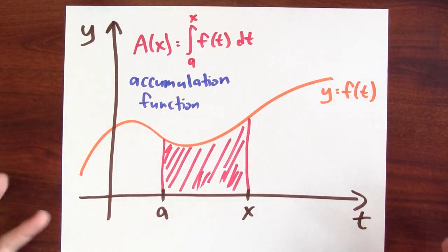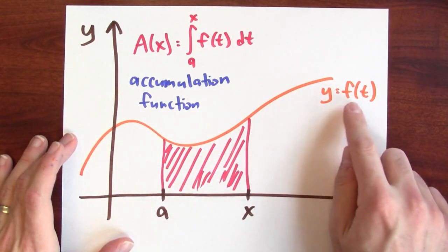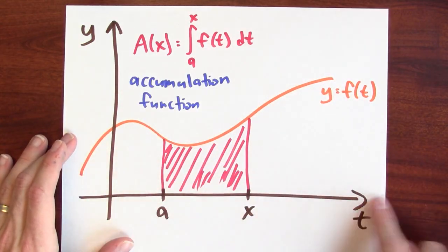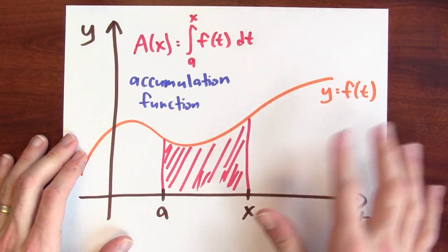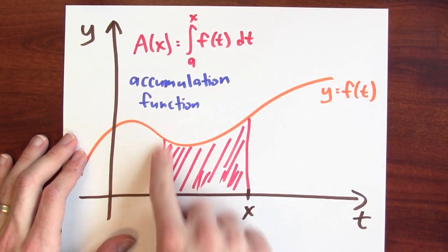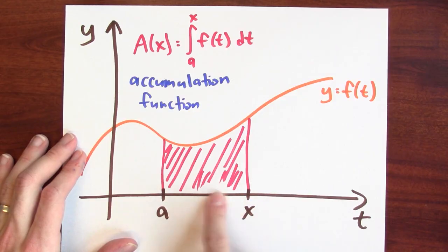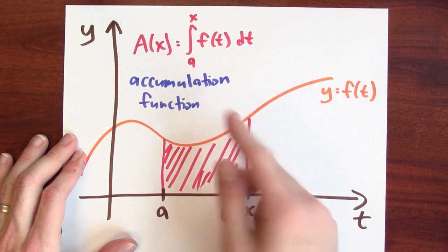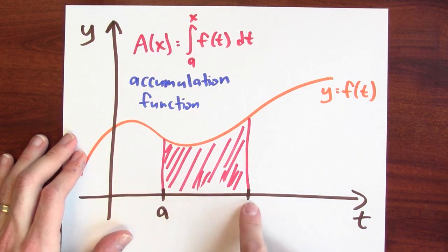What is this accumulation function going to do? Well, here I've graphed y equals f of t on the ty plane. And I picked a fixed point a, and I imagine I've got another point that I can vary, I've labeled x. And the accumulation function is the integral from a to x.